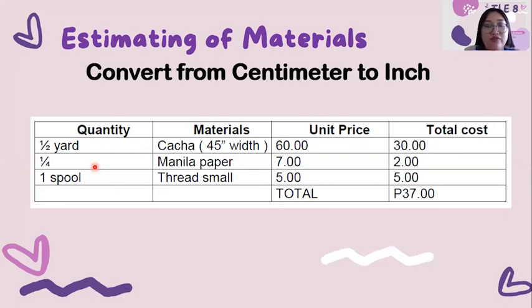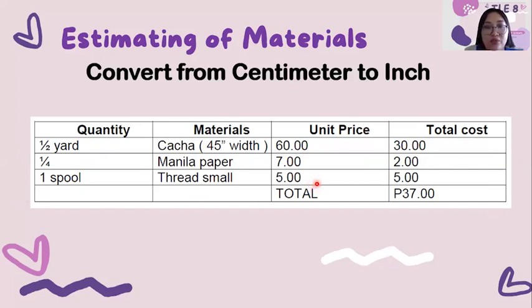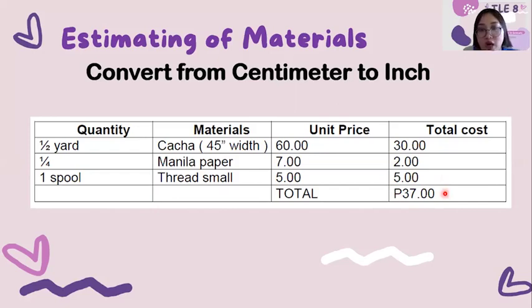You also need one fourth Manila paper at 7 pesos per unit price. Since you'll be using one fourth, we'll divide it by four, and the estimated total cost is 2 pesos. You also need one spool of thread (small), and the unit price is 5 pesos, so the total cost is 5 pesos. Now you need to add the total cost of the materials: 30 plus 2 plus 5 equals 37 pesos — the total cost of one project or organizer.